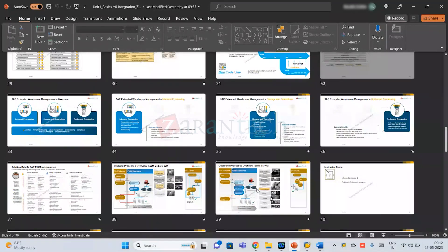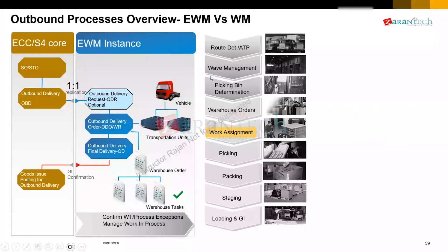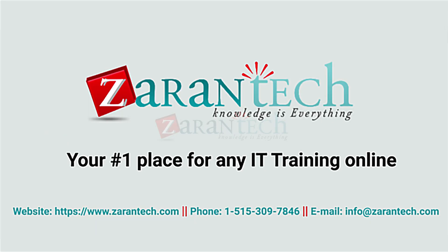The outbound process has two documents. Forget about the ODR or IDN — we have only two documents. What is the main purpose of the final delivery? It is required for splitting line items — delivery split — not the early split. Also for invoice before GA. Now let's do a demo.